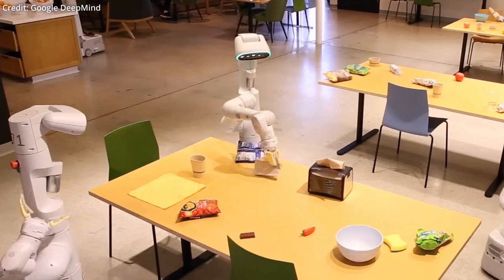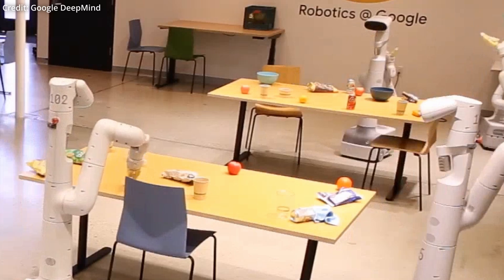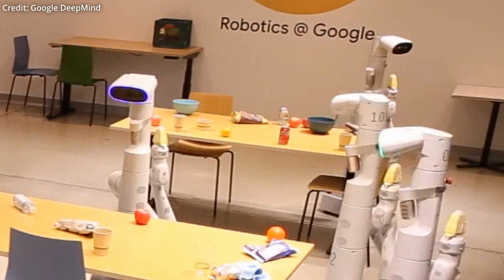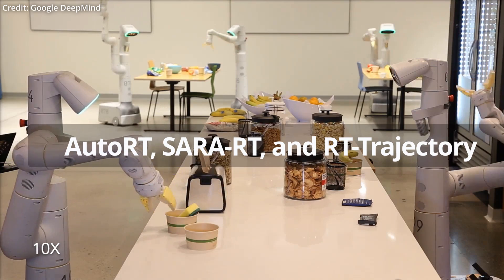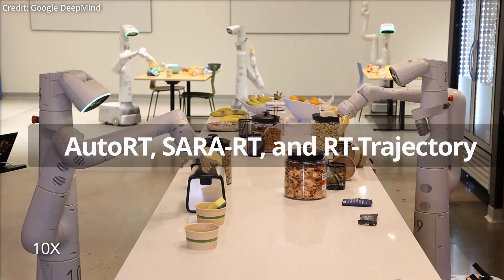But already, Google's DeepMind just unveiled their three latest AI-powered robot vision advances: AutoRT, SARRT, and RT Trajectory. To start,